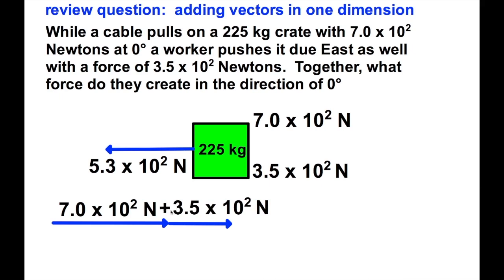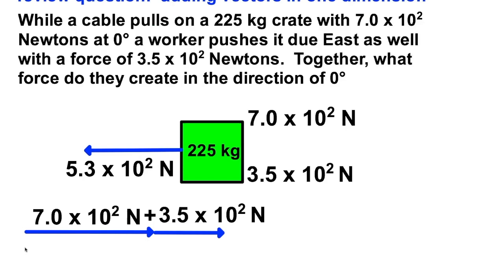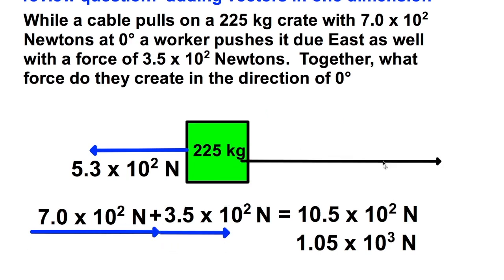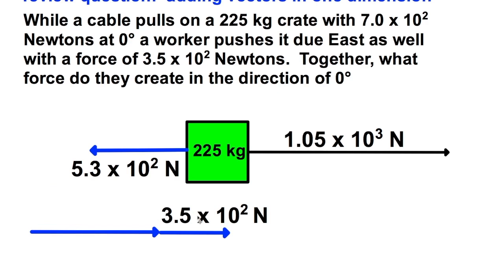You can just put them tail to tip as you see here, and together they would make a resultant vector of 7.0 times 10 to the second plus 3.5 times 10 to the second. They would be both working together with 10.5 times 10 to the second Newtons, or in correct scientific notation, 1.05 times 10 to the third Newtons. So I can just represent those two vectors with one single vector at zero degrees working at 1.05 times 10 to the third Newtons, or 1050 Newtons.